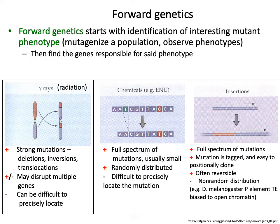In the middle of the spectrum, there's a wide range of chemicals you can use to induce smaller scale deletions, inversions, or translocations. One of the nice things about using these chemicals is that your mutations are typically smaller than gamma rays and still relatively randomly distributed around the genome, so with enough individuals you can cover a large portion of the genome. A downside is that because the mutations are still larger than single base pair changes, it can still be pretty difficult to precisely locate the mutation.